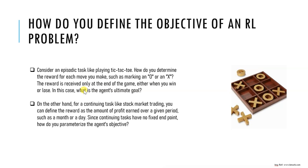The objective of a reinforcement learning agent is to learn the optimal policy that maximizes a numerical reward signal. In reinforcement learning, an agent interacts with an environment and makes decisions based on observations it receives. The agent's goal is to learn the optimal action to take at each step, which will give the maximum cumulative reward over time.